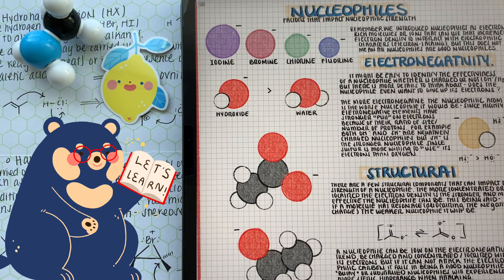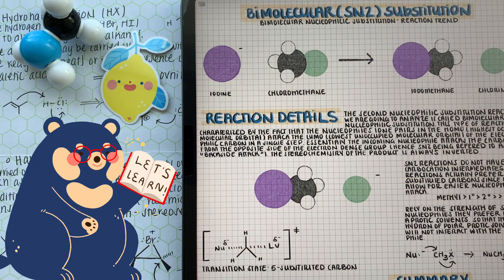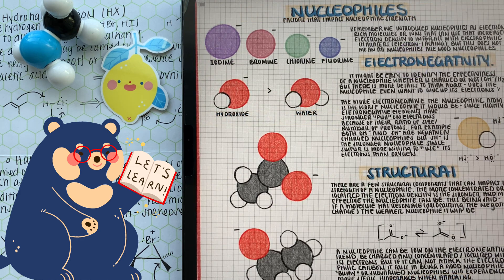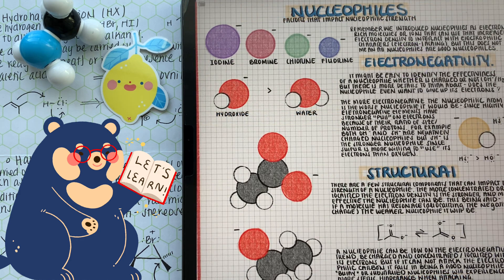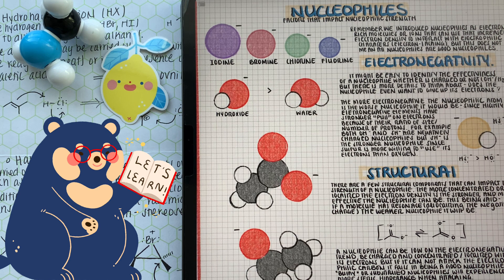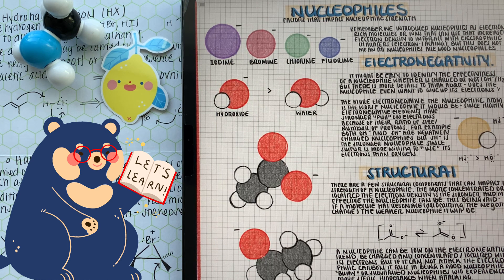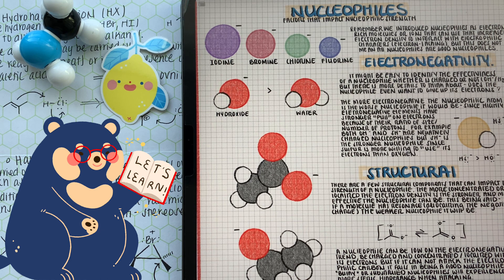So we're going to start off with talking about nucleophiles and nucleophilic strength. Reaction pathways such as SN2 are really dependent on strong nucleophiles, since their reaction happens in one step. So we have to be able to gauge what is a good and strong nucleophile. A nucleophile has two characteristics: it's electron rich, it has a high density of electrons, and it's also willing to donate those electrons through a reaction.